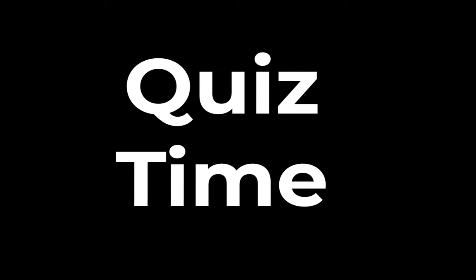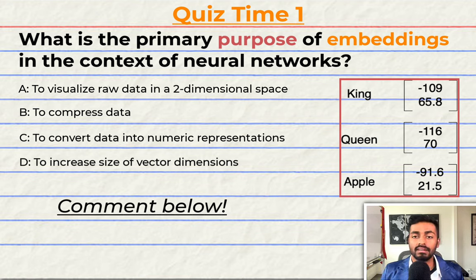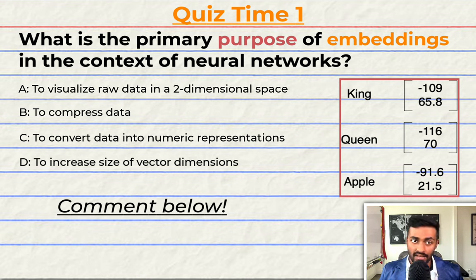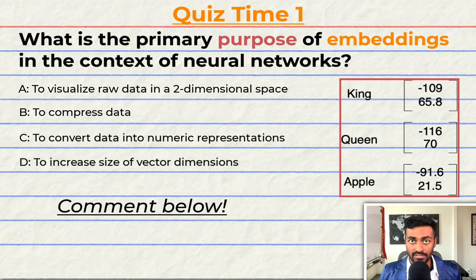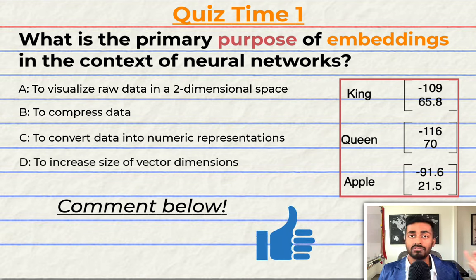Quiz time! Have you been paying attention? Let's quiz you to find out. What is the primary purpose of embeddings in the context of neural networks? A: to visualize raw data in a two-dimensional space. B: to compress data. C: to convert data into numeric representations. Or D: to increase the size of vector dimensions. Comment your answer down below and let's have a discussion. If you think I deserve it, please do consider giving this video a like — it will help me out a lot. That's going to do it for quiz time and pass one of the explanation, but keep paying attention because I will be back to quiz you.